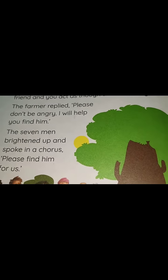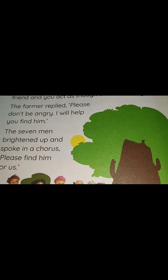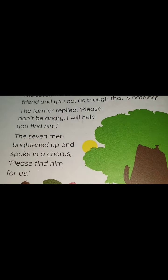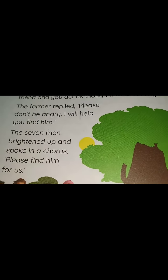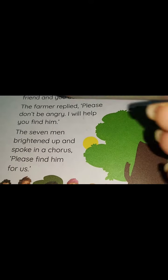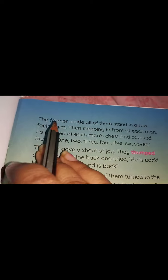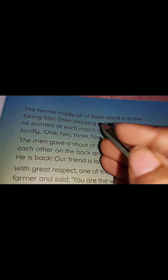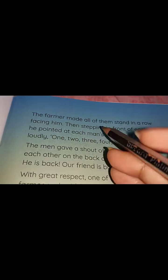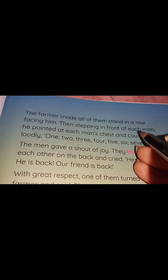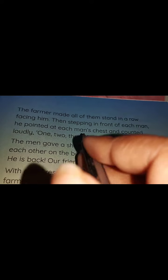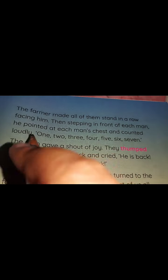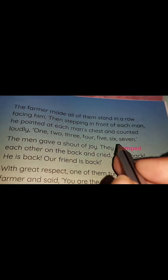All the seven men were very happy and delighted. They all spoke up together saying, 'Please find him for us.' The farmer made all of them stand in a row facing him. Then, stepping in front of each man, he pointed at each man's chest and counted loudly: one, two, three, four, five, six, seven.